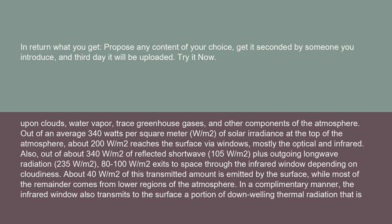Out of an average 340 W/m² of solar irradiance at the top of the atmosphere, about 200 W/m² reaches the surface via windows, mostly the optical and infrared.